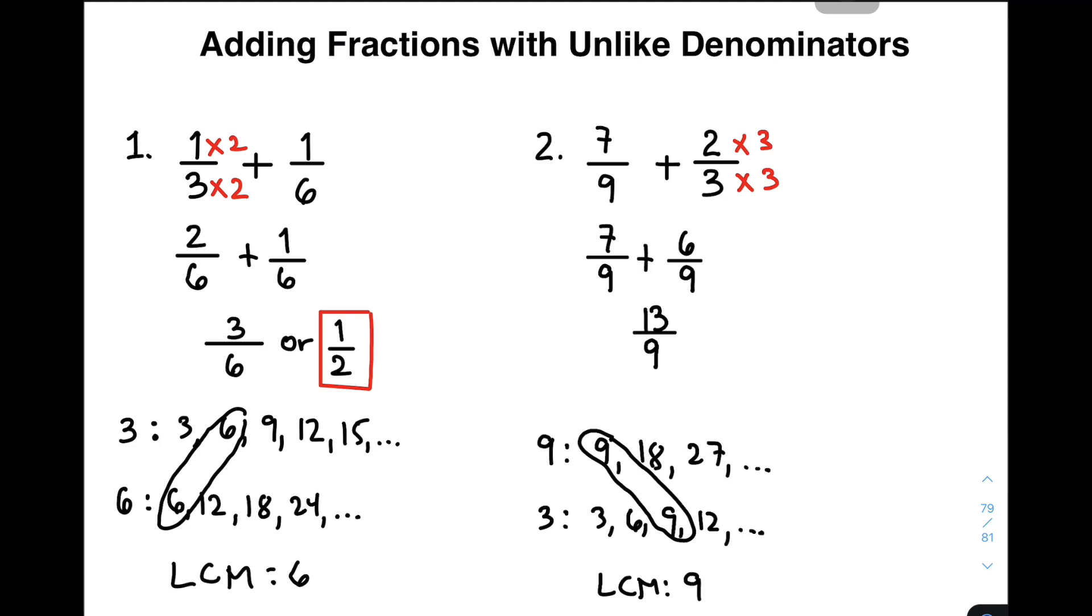The equivalent mixed number of 13/9 is simply 1 and 4/9. So how did we get 1 and 4/9? What I did is I divided 13 by 9. 13 divided by 9 is 1, then 1 times 9 is 9, and then I subtract this, which equals 4.